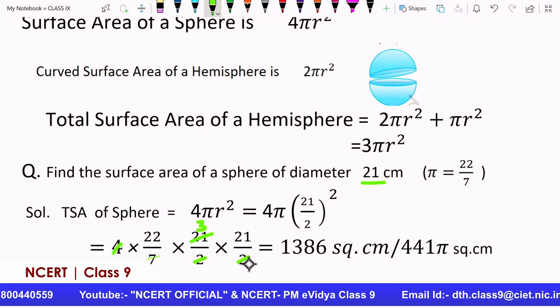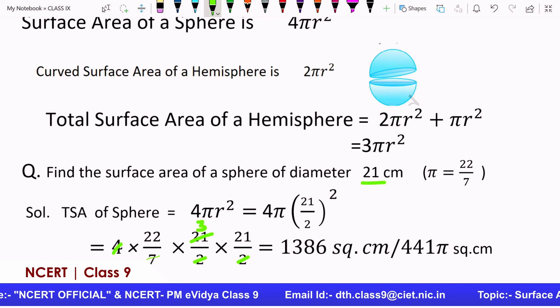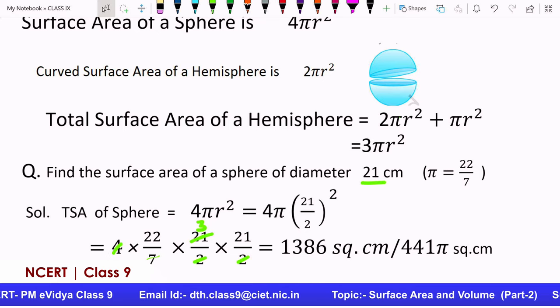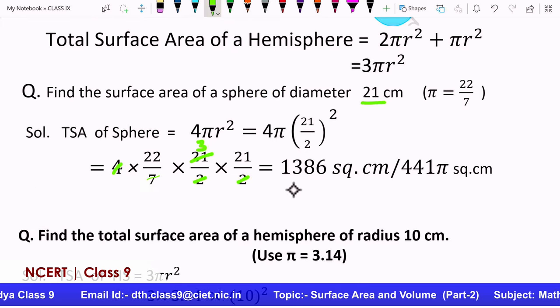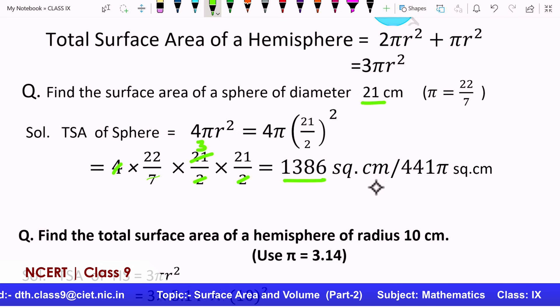So children, whenever you calculate, compute, see if there is any connection with the numbers so that you can take up the calculations easier. So we have this multiplication and it comes out to be 1386 square centimeters. That is the value of it. Now, another value I have written, that is this value 441π square centimeters. What does this mean?